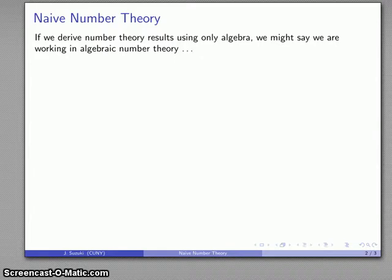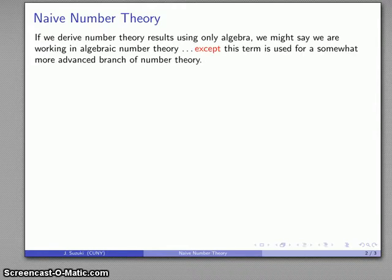If I derive number theory results using only algebra, we might say that we're working in algebraic number theory. The problem is mathematicians are really bad at making up new names for things.